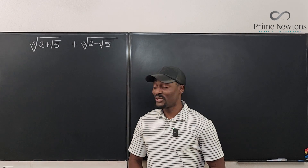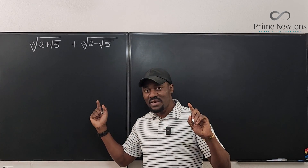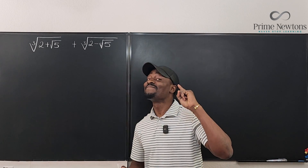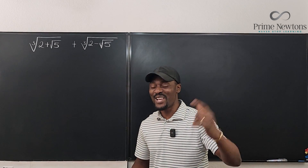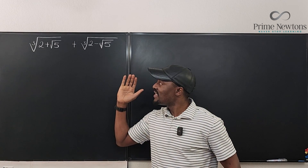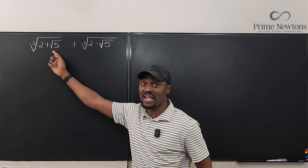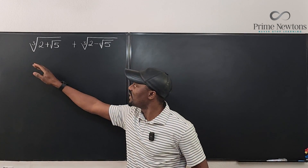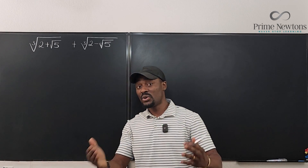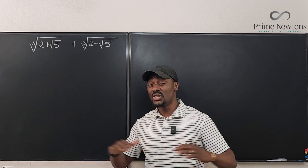Welcome to another video — I'm glad to have my blackboard back temporarily. Let's see how to solve this problem, because this is tricky if you don't have a calculator. You're asked to simplify a cube root expression, and we don't know the exact value of the square root of 5, let alone the cube root of the sum or difference of the square root of 5 and 2. So we need to employ some algebraic manipulations.